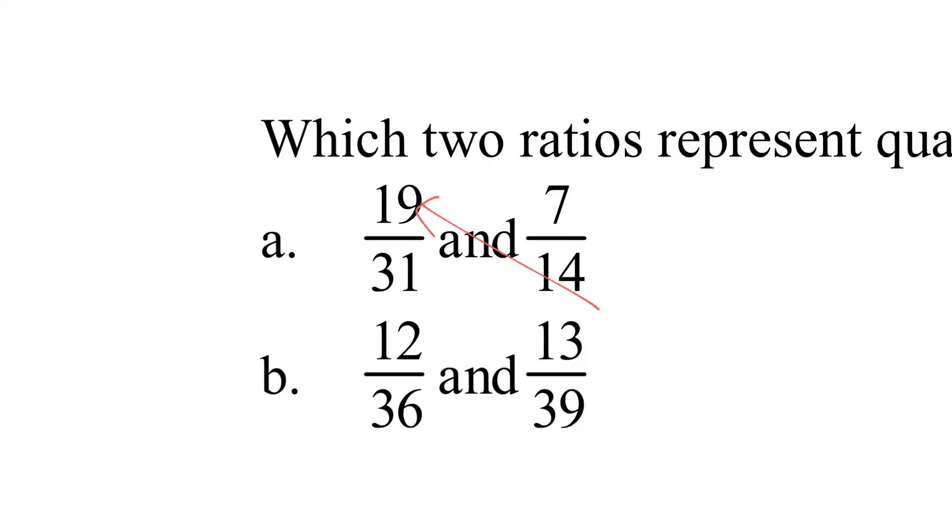So 19 times 14, I'll do that right now. 19 times 14 is 266. And 31 times 7. Oh, I could probably figure that. What, 217, I think? 31 times 7? Yeah, 217. So I'm looking for this number to be the same as the other number, and it ain't. And we just rinse and repeat until we get it.